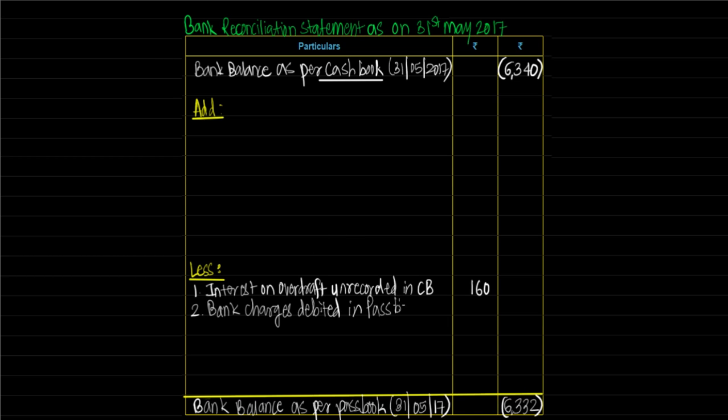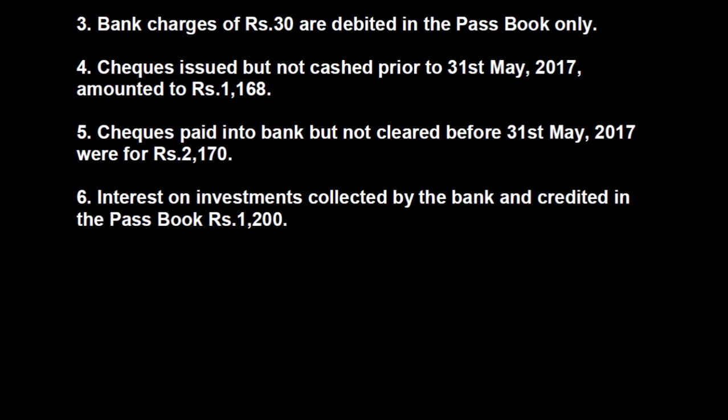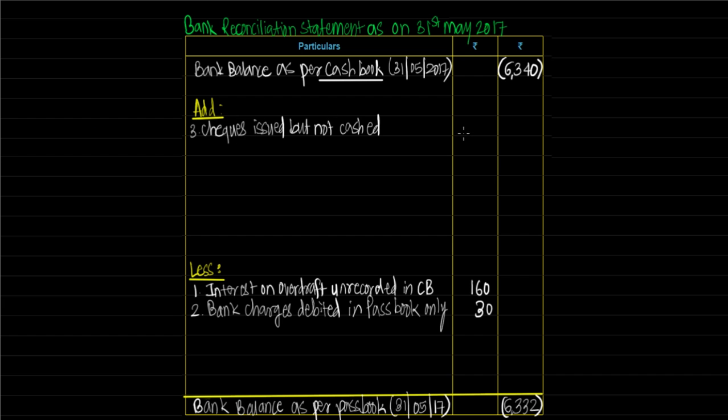Cheques issued but not cashed prior to 31st May 2017 amounted to Rs 1,168. We have issued the cheques — that is, in the cashbook we have recorded Rs 1,168 as an expense — but the person to whom we gave those cheques has not presented them to the bank. So our passbook shows more balance. To land upon passbook balance, we will have to add this Rs 1,168 because it is an expense recorded in cashbook but not in passbook. We write: cheques issued but not cashed — amount Rs 1,168.